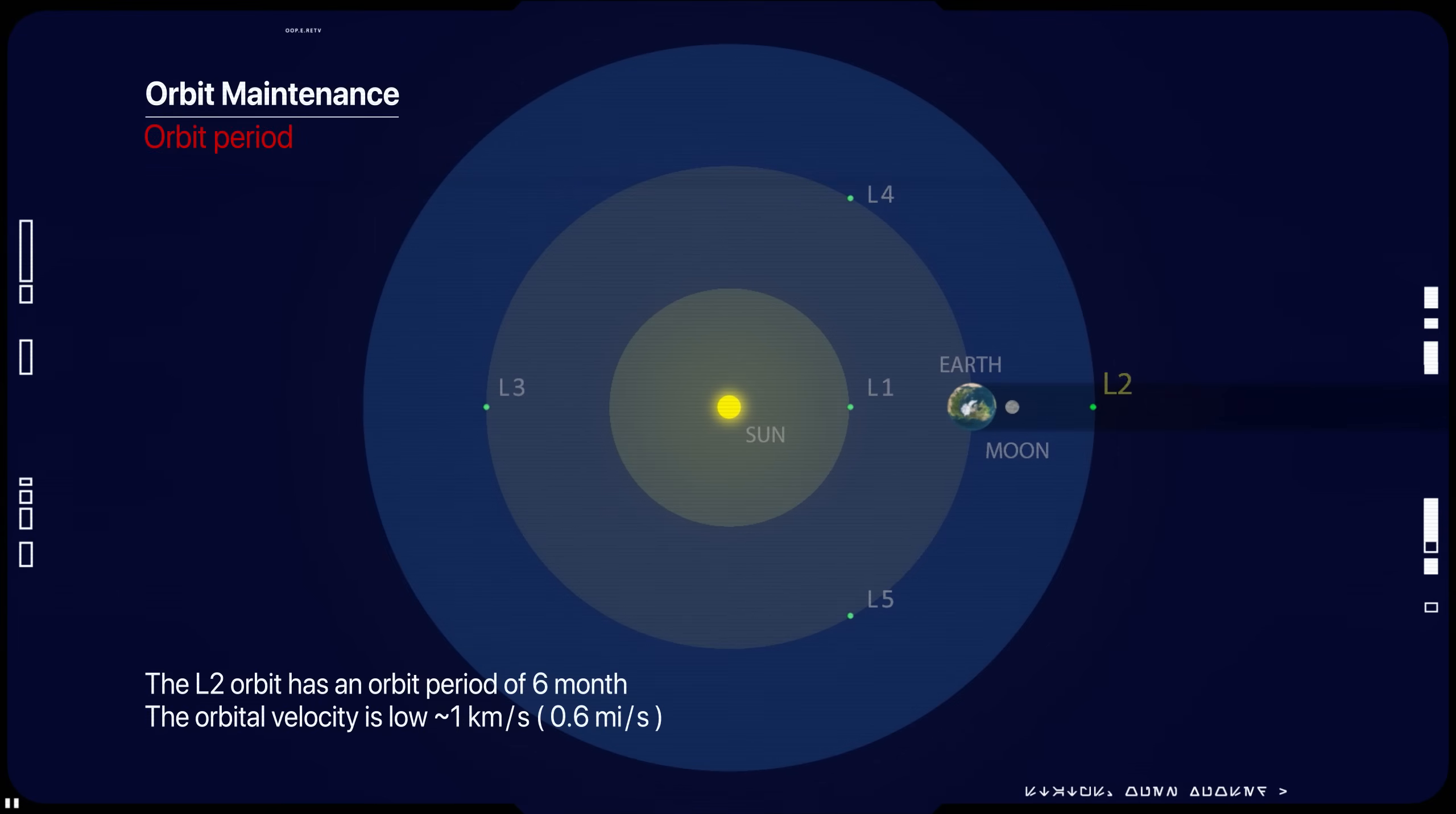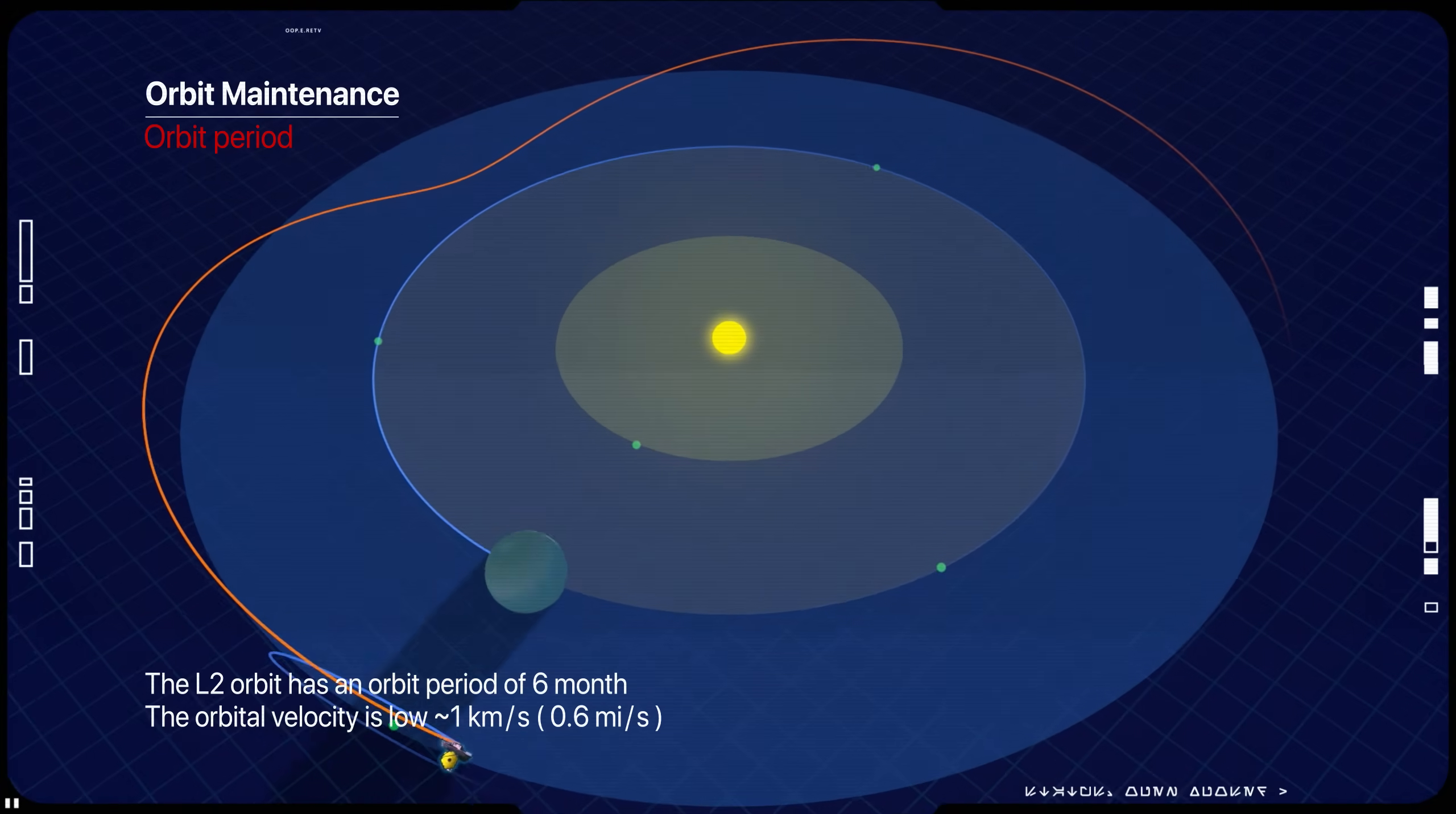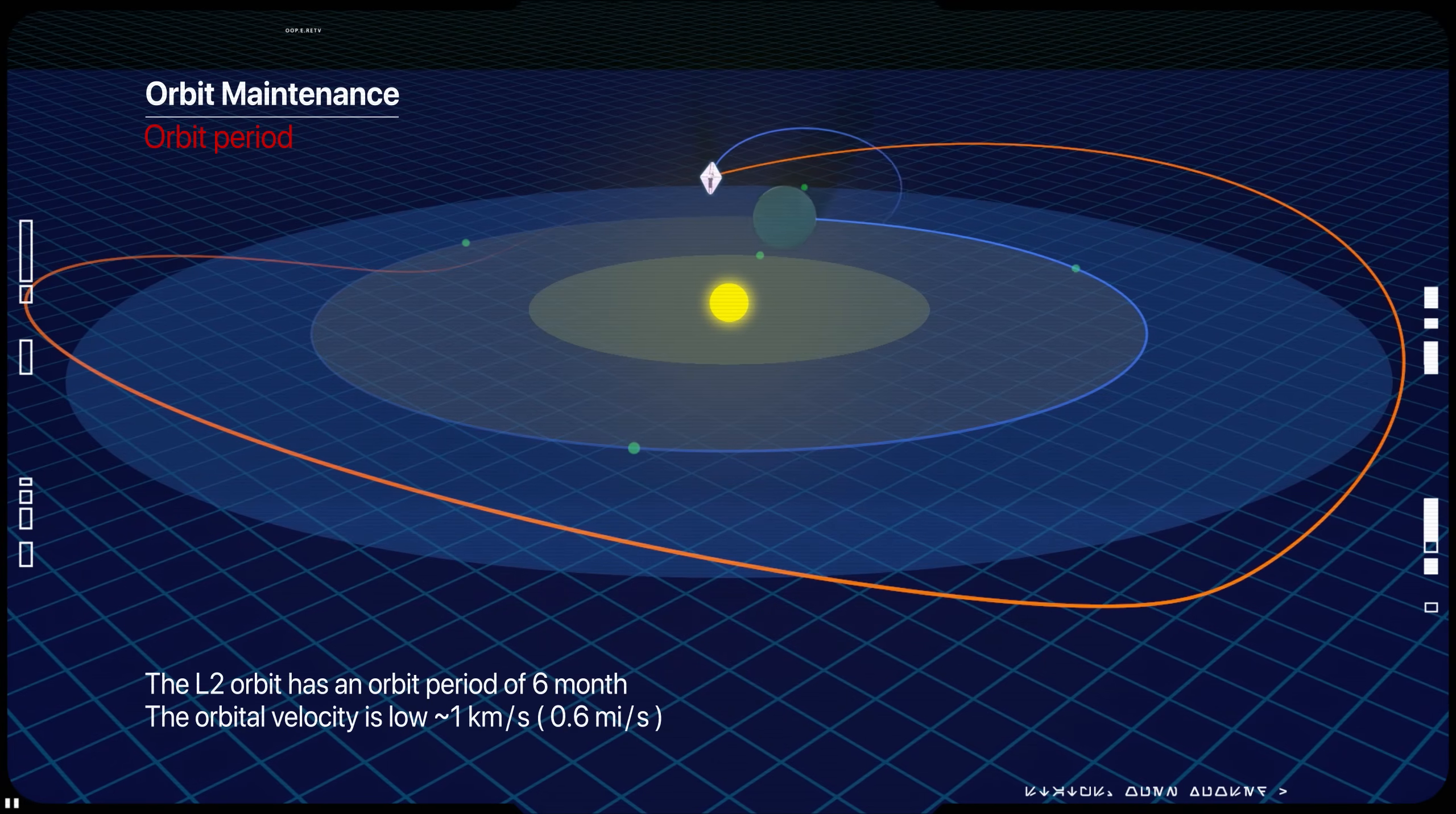The L2 orbit has an orbit period of six months. While orbits above the L2 point are inherently unstable, the orbit size is large and the orbital velocity is low, about 1 km per second. So the orbit decays slowly.